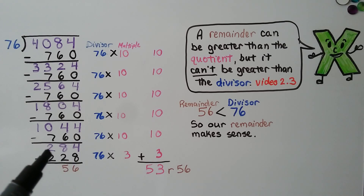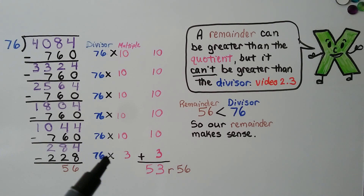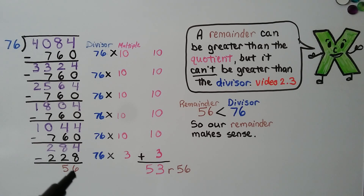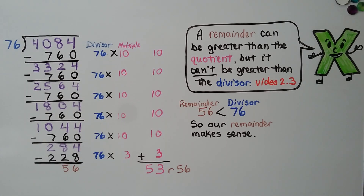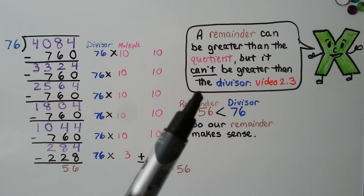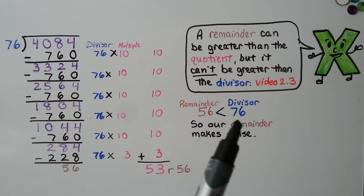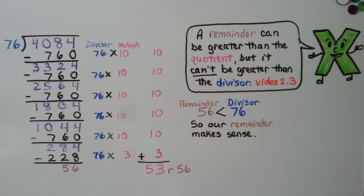Now we need a smaller multiple because we don't have enough to take away 760. We try 76 times 3, which is 228, and get 56 left over. We can't fit another 76, so we add all our multiples to get 53, with a remainder of 56. A remainder can be greater than the quotient but not greater than the divisor — our remainder is less than our divisor, so it makes sense.